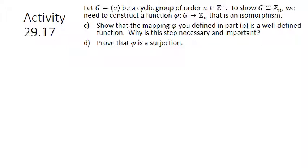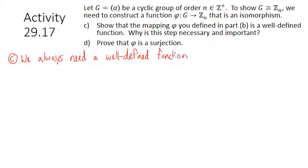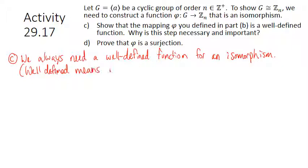Part C: show that the mapping phi defined in Part B is a well-defined function, and explain why this step is necessary. We always need a well-defined function in order to have an isomorphism — it's not even technically a function if it's not well-defined. We actually saw an activity like this last time where we had a function that was not well-defined, and even though it was a bijection that preserved the group structure, it still wasn't an isomorphism. Well-defined means: if A equals B — if A and B are two representations of the same element — then they must have the same output, because one element can't have two different outputs.